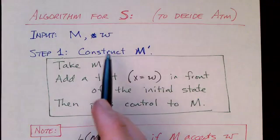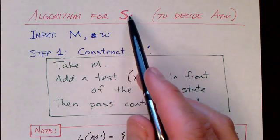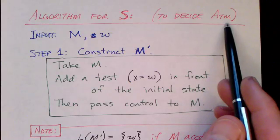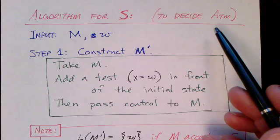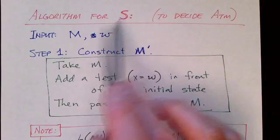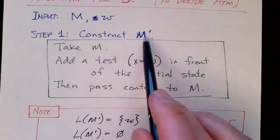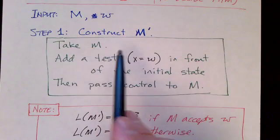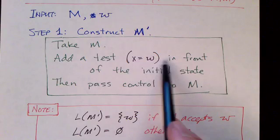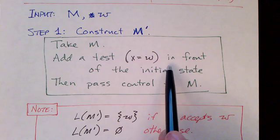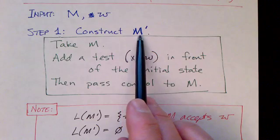Algorithm S has two steps. Let's look at the whole algorithm for S now — we're constructing an algorithm to decide the acceptance problem for Turing machines, assuming we have a decider R which tests whether a machine accepts anything or not. Algorithm S takes two inputs: the description of a Turing machine and a string. In step one it constructs M prime — a new Turing machine — by taking M and adding a test in front to check whether X equals W. If X does not equal W it rejects immediately; otherwise it passes control to M. That's how algorithm S builds M prime in step one.